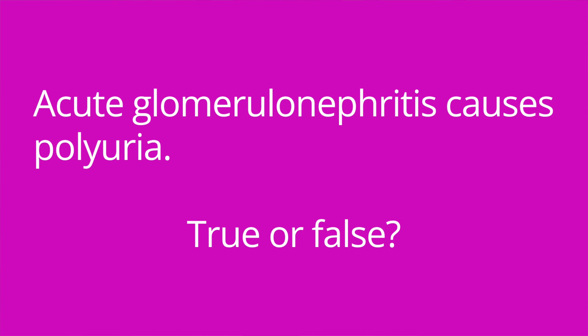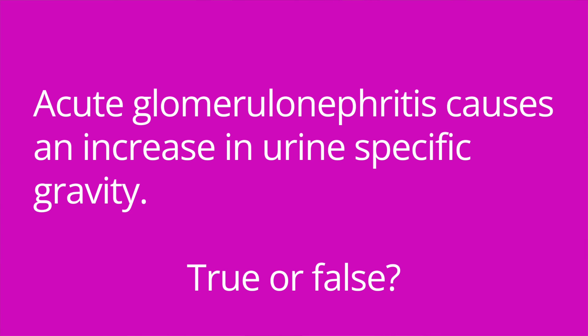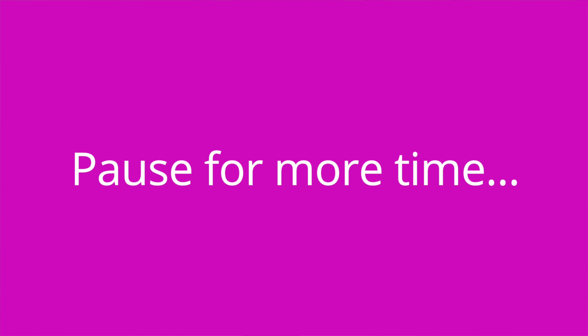Question number three: acute glomerulonephritis causes polyuria — true or false? The answer is false. It actually causes oliguria, so a decrease in urine output. Question number four: acute glomerulonephritis causes an increase in urine specific gravity — true or false? The answer is true.